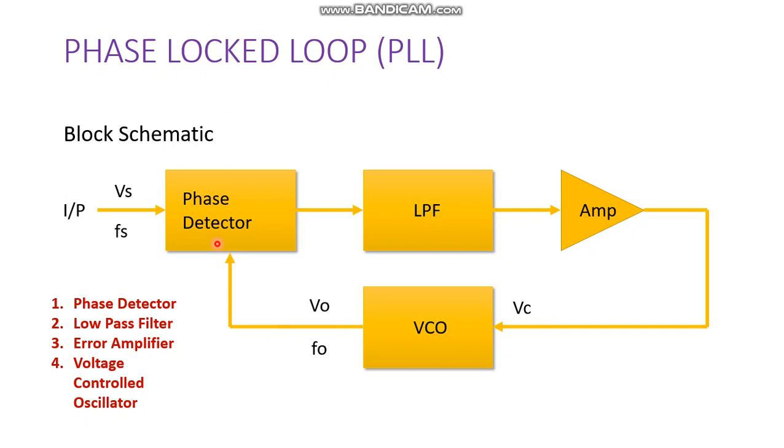If the two signals differ in frequency and or phase, the error voltage ve is generated. The phase detector is basically a multiplier and it produces the sum fs plus fo and difference fs minus fo. So that's why both frequencies are there: fs plus fo and fs minus fo.